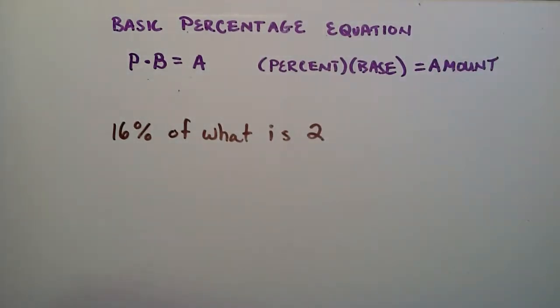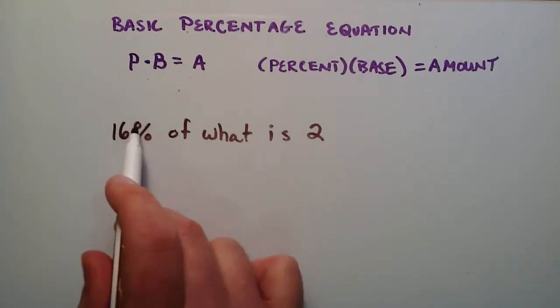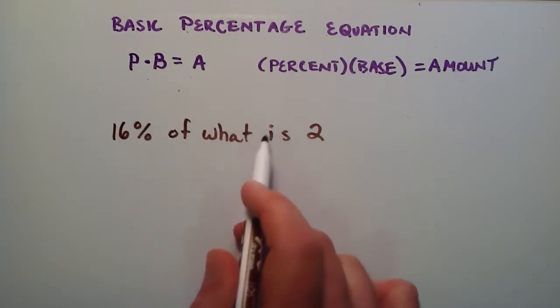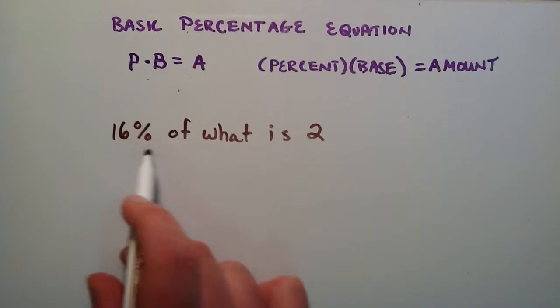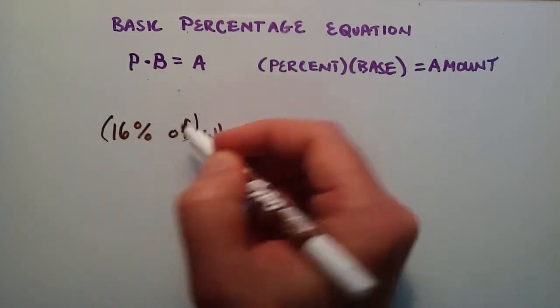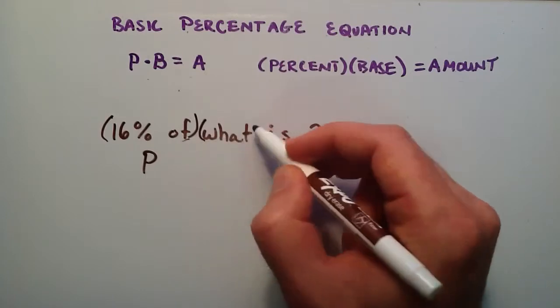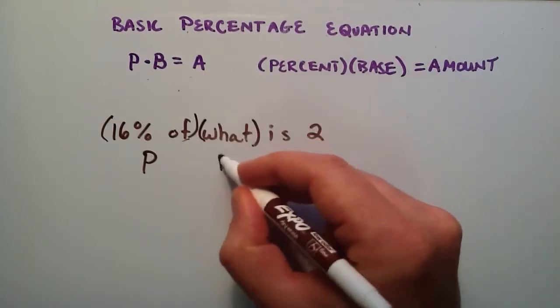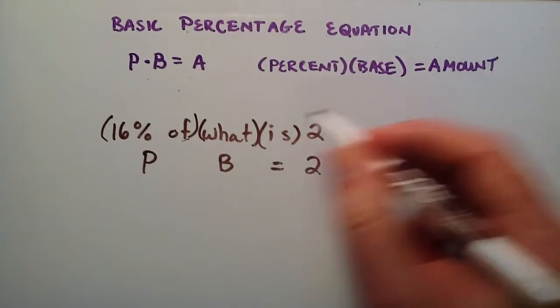In the last case, we were solving for the percentage, but this time we have the percentage. We know it's 16%, and the 'is' is our equal sign. Basically, this is P, our percent. Let's put that in parentheses and say that's P. The 'of what' is our base, 'is' equals the amount.